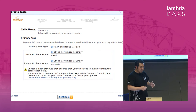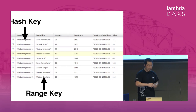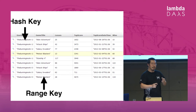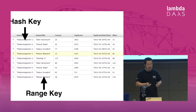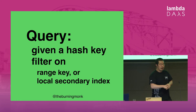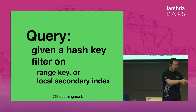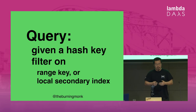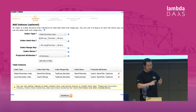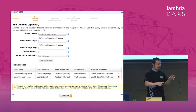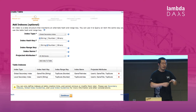DynamoDB is a semi-schema database. For each row in the table, you need to specify a hash key, which determines the partitioning of the data on physical machines. You can also optionally specify a range key, which allows you to run a query against your data. In DynamoDB terminology, a query means you specify a hash key and then specify some conditional filters on the range key. Or you can use one of two indices: a local secondary index, which gives you an alternative range key, or a global secondary index, which allows you to specify an alternative pair of hash and range keys.